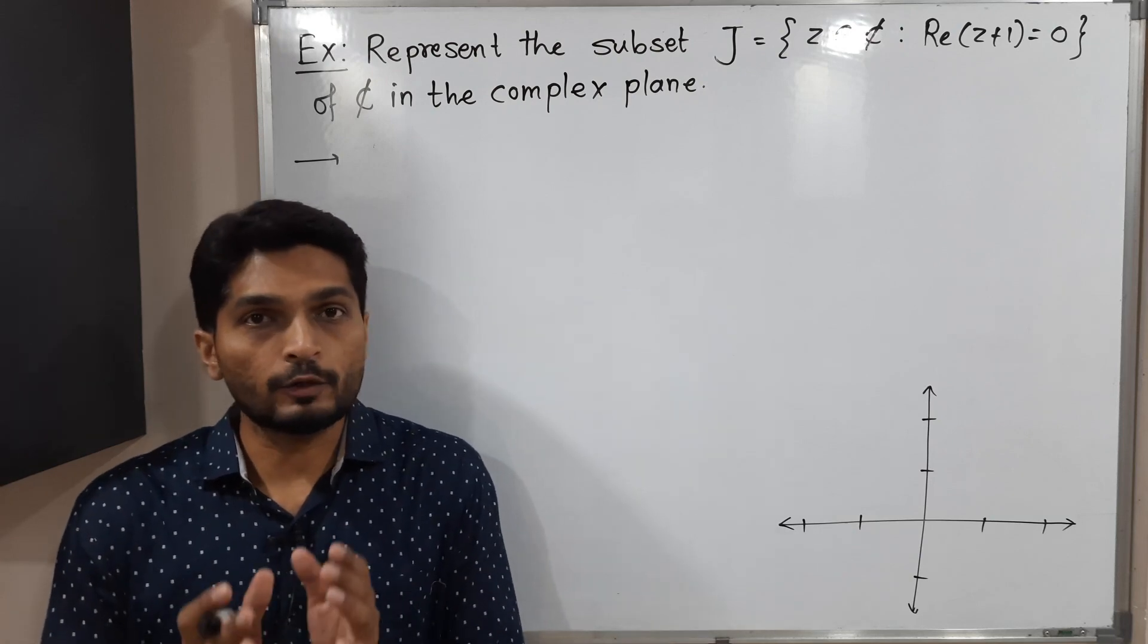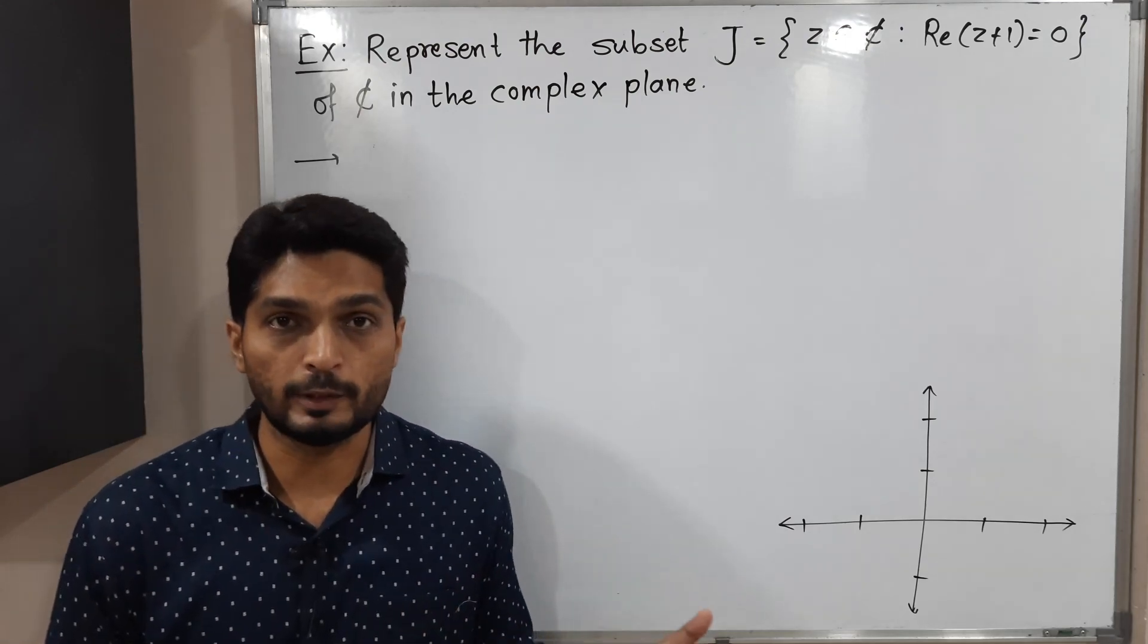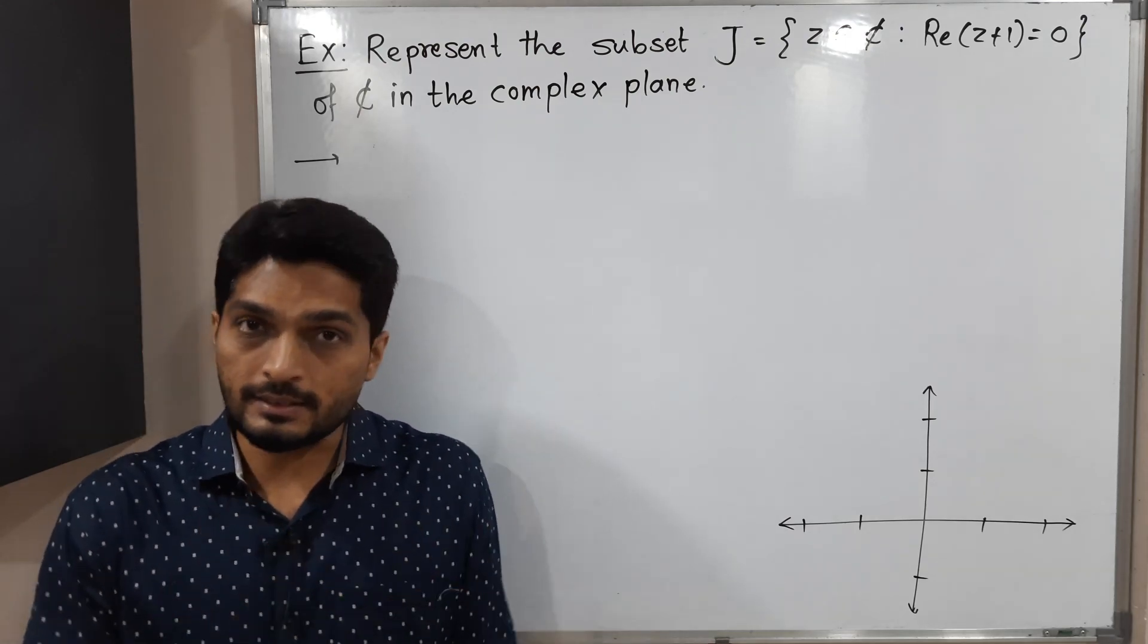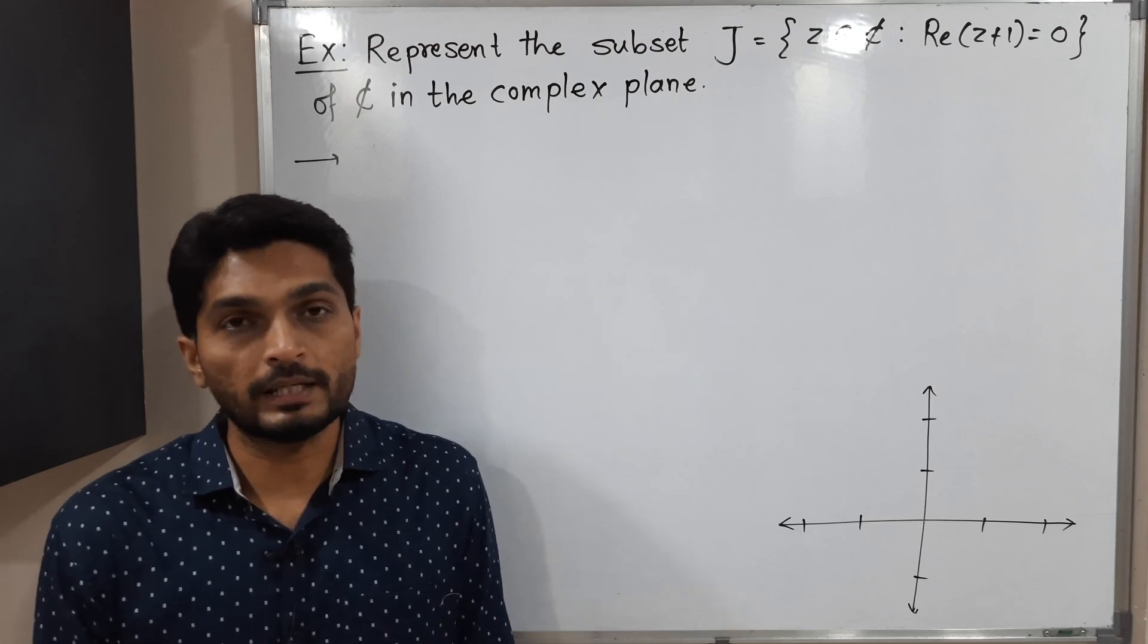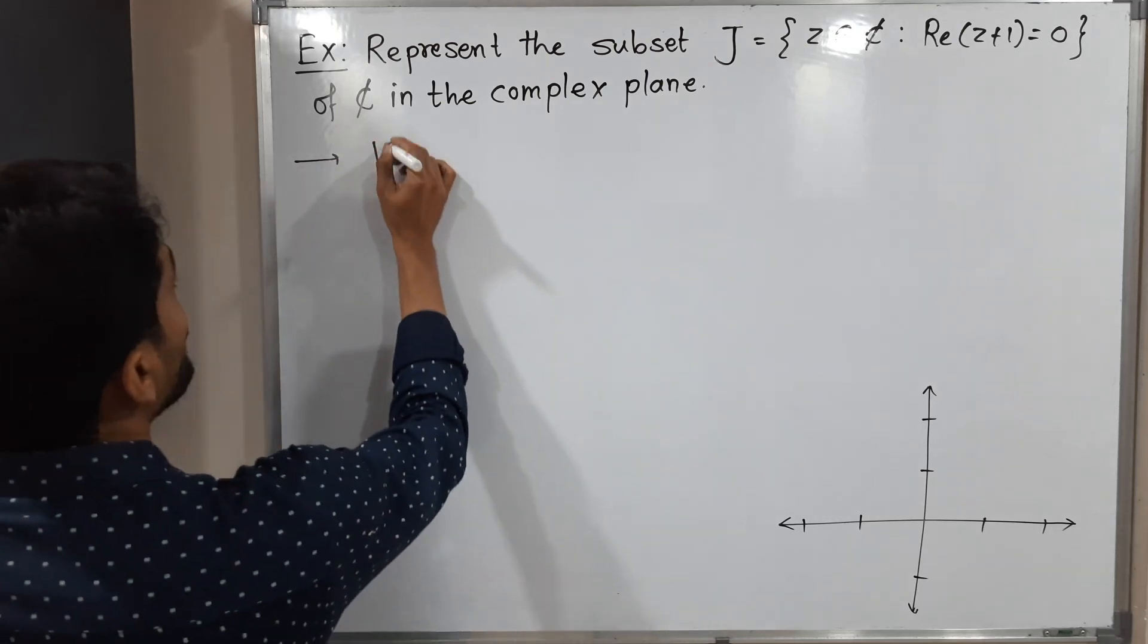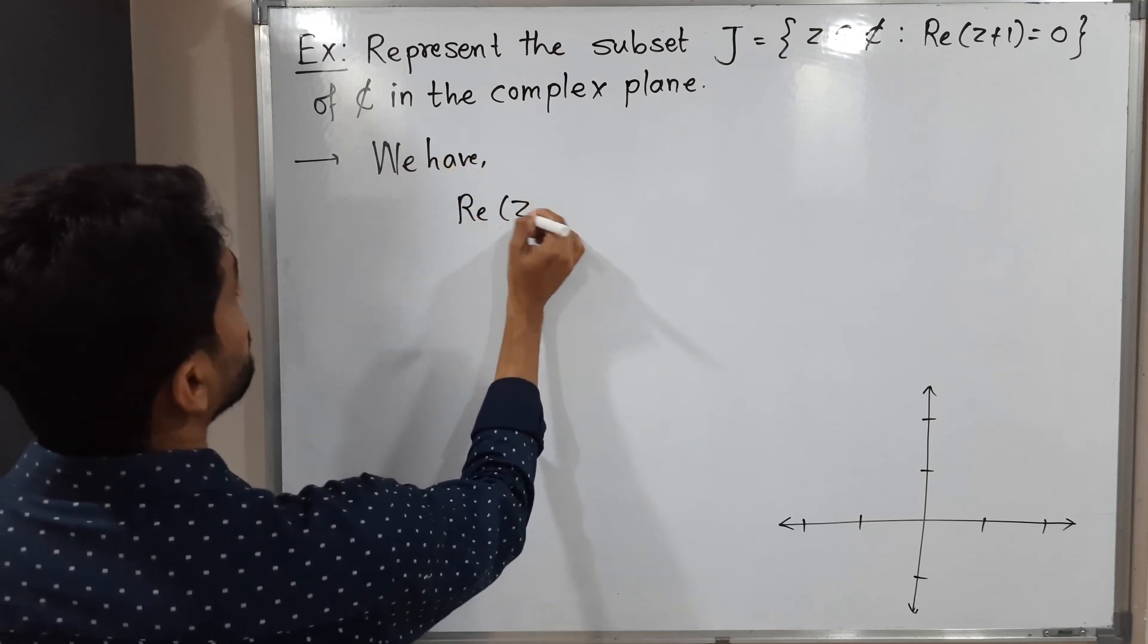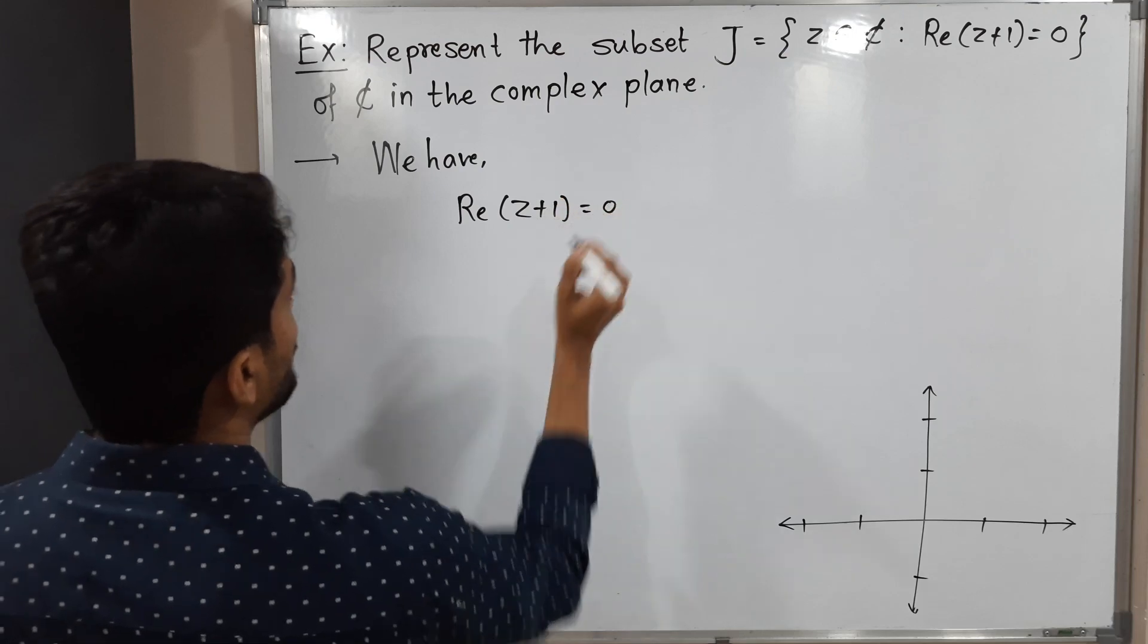Z is a set of complex numbers which satisfy that condition. The condition is real part of Z plus one equals zero. Let us discuss the condition first so we can easily find the region in the complex plane. We have, let us write the condition: real part of Z plus one equals zero.